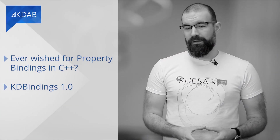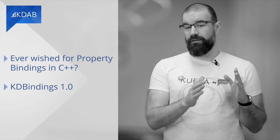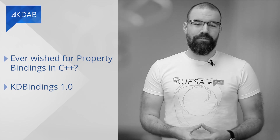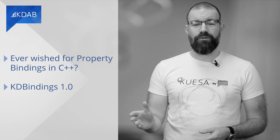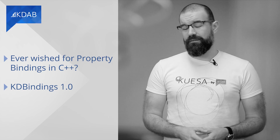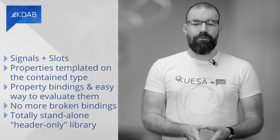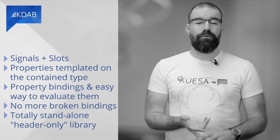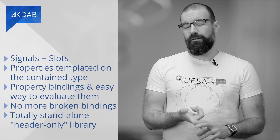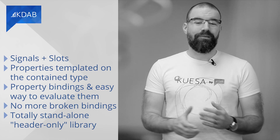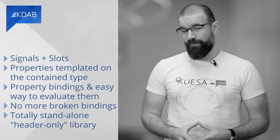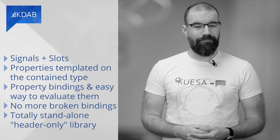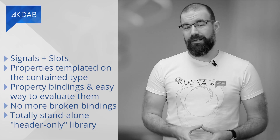Have you ever wished that property bindings like you find in QML and signals and slots like you find in Qt would also be available in pure C++ code? Well, so did our developers at KDAB. They came up with KD Bindings. Version 1.0 came out recently and is available under MIT license on GitHub. From plain C++ you get signals and slots, properties templated on the contained type, property bindings and an easy way to evaluate them, no more broken bindings, and it's a totally standalone header-only library. It can still be used together with Qt, but has no heavy Qt dependency.